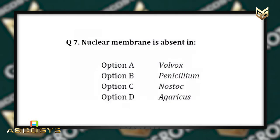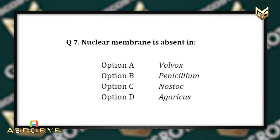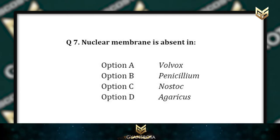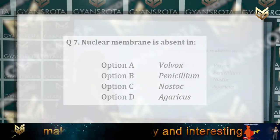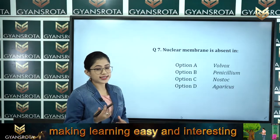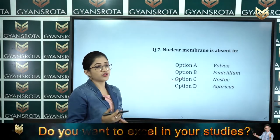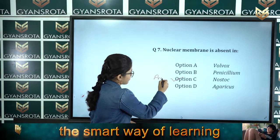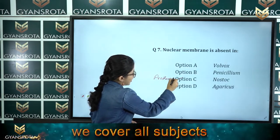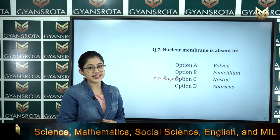Question number 7: Nuclear membrane is absent in — option A Volvox, option B Penicillium, option C Nostoc, option D Agaricus. This is from the chapter Biological Classification. The correct answer is option C, Nostoc, because Nostoc is a prokaryote and prokaryotes do not have a nuclear membrane. Option C is the correct answer.